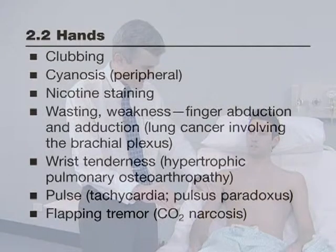Look for clubbing, peripheral cyanosis, and tar staining. Squeeze the wrist to detect the tenderness of hypertrophic pulmonary osteoarthropathy.